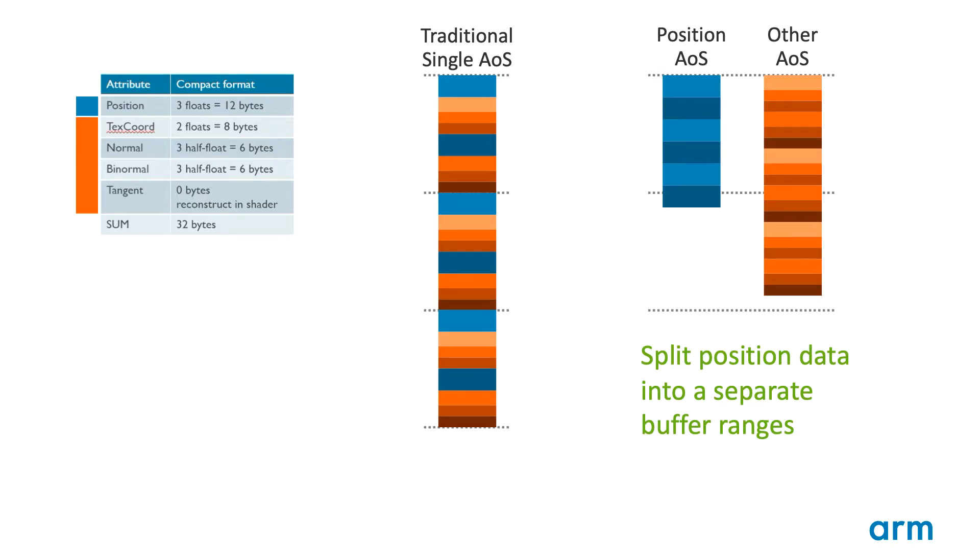A better solution is to store the vertex as two separate array of structures arrays. The first contains interleaved data needed for position calculation. The second contains interleaved data needed for the remainder of the vertex shader. Now, the position shader will only fetch useful position-related data, and the application will get the full bandwidth savings advantage of the IDVS scheme.